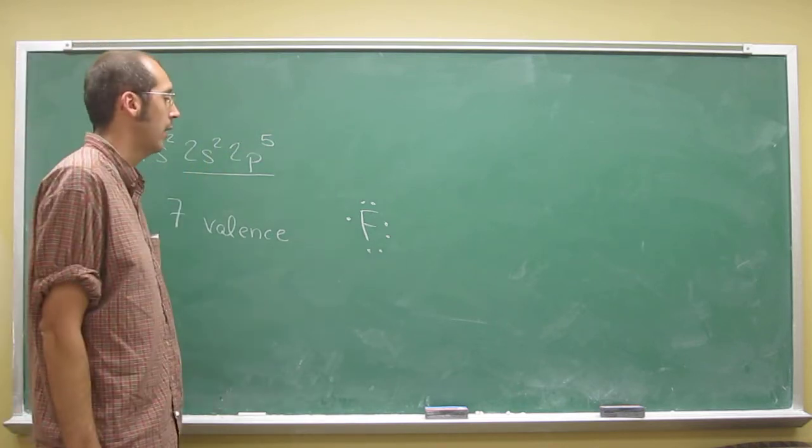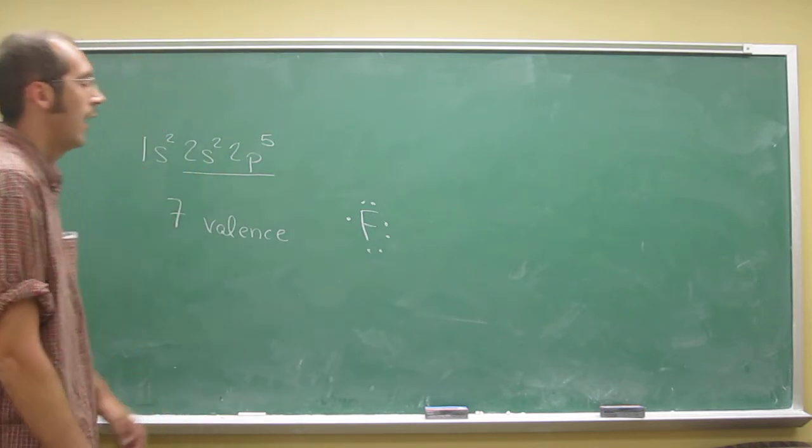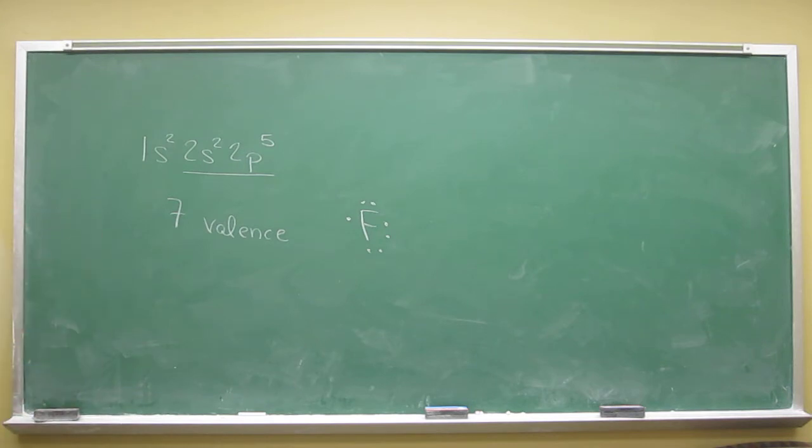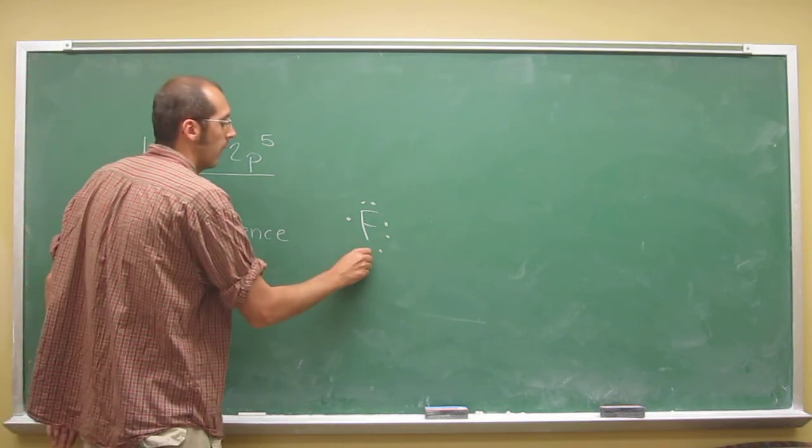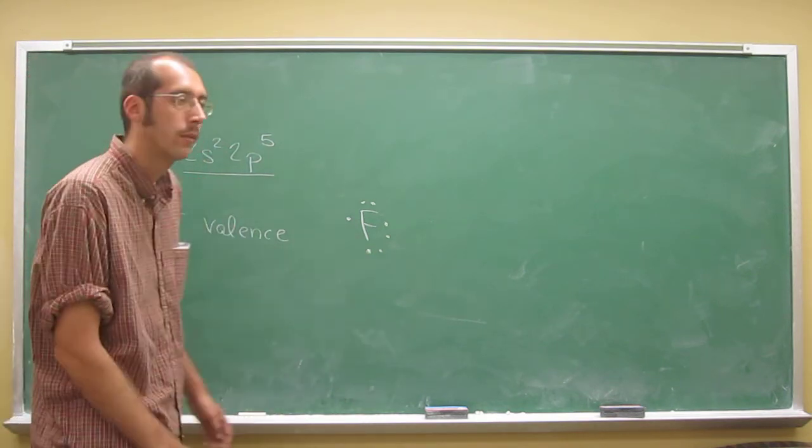And in fact, in a second we'll learn that atoms become what are known as ions when, in the case of fluorine, they prefer to have their octet filled or have 8 electrons.